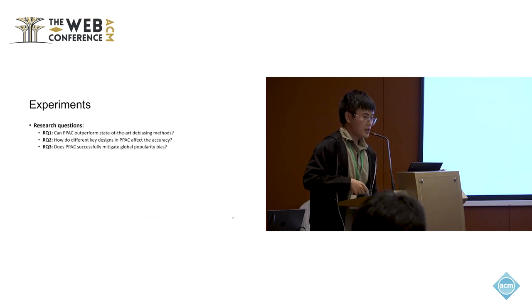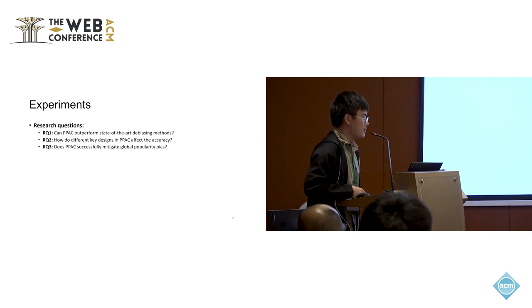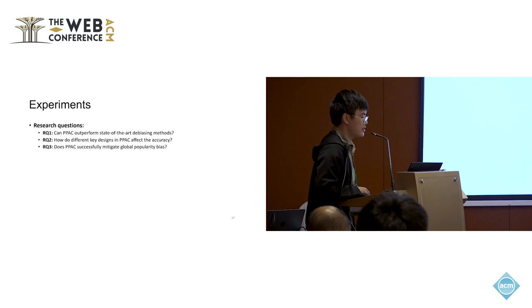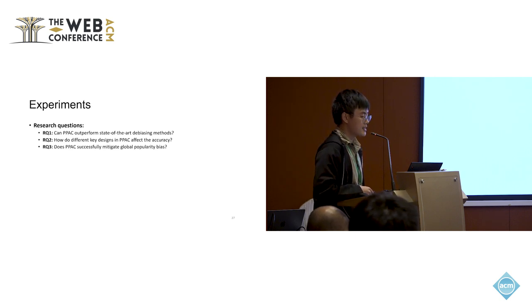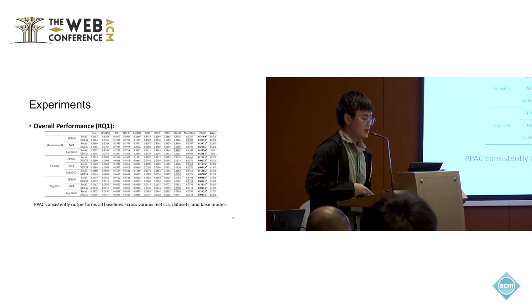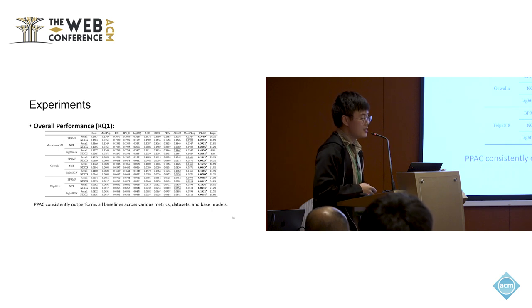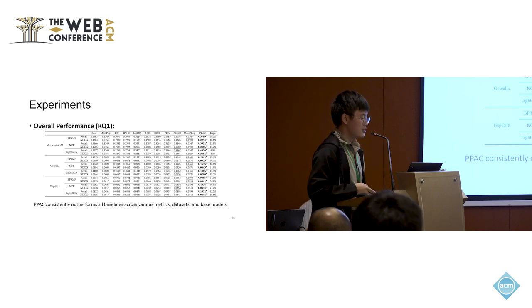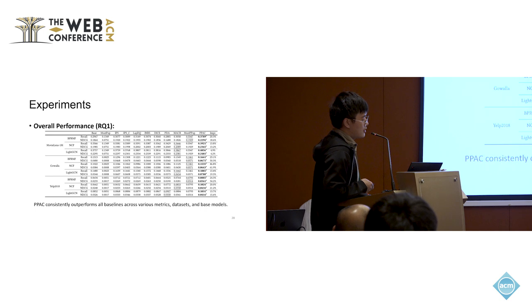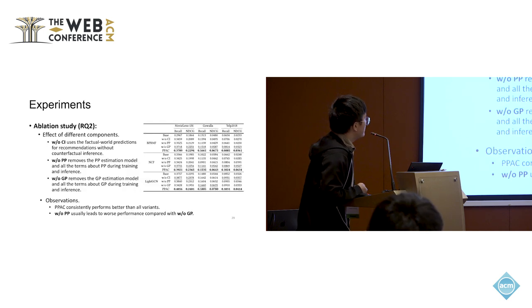Our experiments aim to answer three questions: first, can PPAC outperform state-of-the-art de-biasing methods? Second, how do different key design components affect accuracy? Third, does PPAC successfully mitigate popularity bias? For the first question, we find that PPAC consistently outperforms all baselines across various metrics, datasets, and base models.